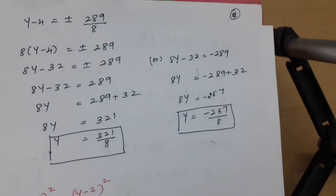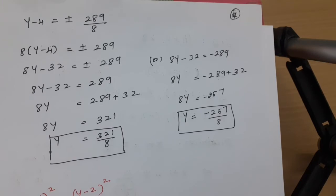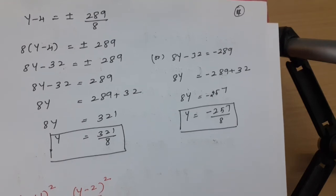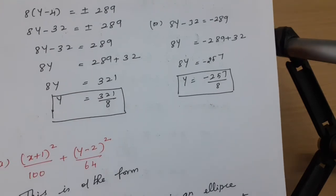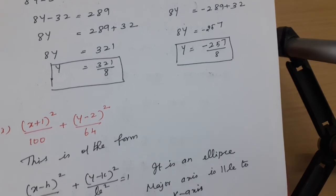To identify the axis: if the denominator of x squared is the greatest value, the major axis is along X. If the denominator of x squared is the smallest value, the major axis is along Y. That's the key rule.